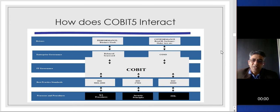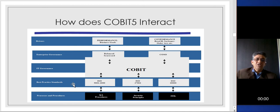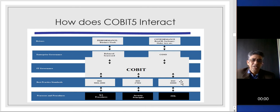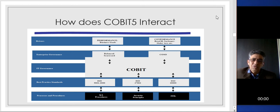How does COBIT interact? It's called the goals cascade. There are drivers — business wants something — and enterprise governance, which means your C-suite. Then you have the CTO and CIO. Best practices are already there. ISO 9001 is quality, 27002 is related to security, and 20000 is related to IT service management. So there are certain QA procedures, security principles, and a TIP. All these things interact on a timely basis with COBIT 5, which is integrated with all these project management methodologies, quality processes, and domains — they work hand in hand.